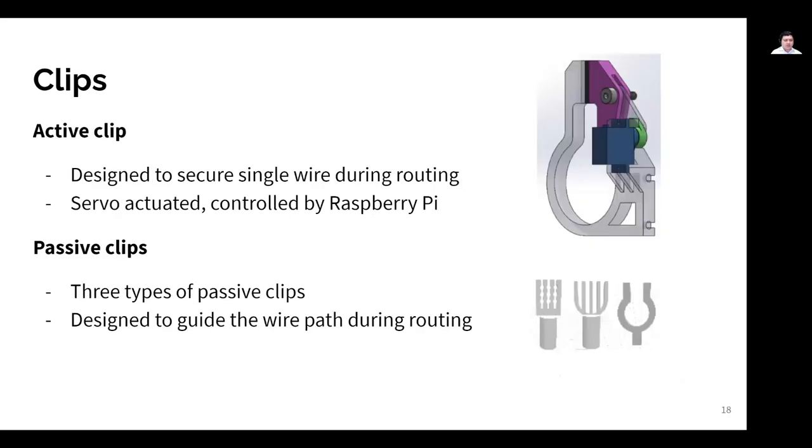Finally, the clips. We have two different types of clips, active clips and passive clips. The role of the active clip is to fixture a single wiring routing process and is actuated by a servo for this purpose, controlled by our Raspberry Pi through a servo controller. On the other hand, the passive clips generally are designed to guide the path of the wire during routing and are not actuated at all. One particular clip to point out is on the far left. This we call the cactus clip, and the cactus clip has the purpose of positioning wire ends for termination into connectors manually.